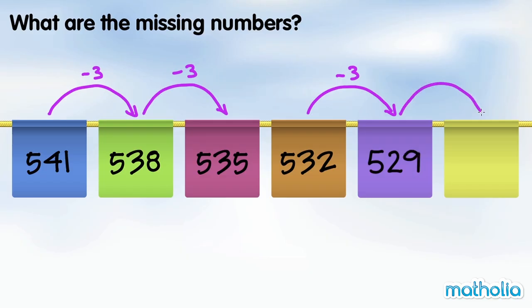539 minus 3 is 536. The missing numbers are 539 and 526.